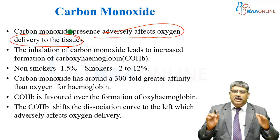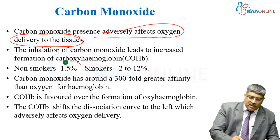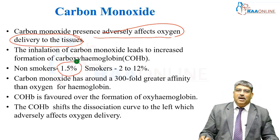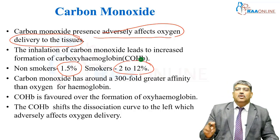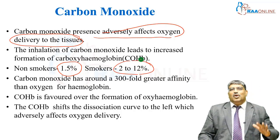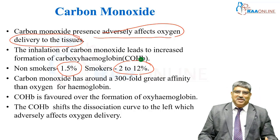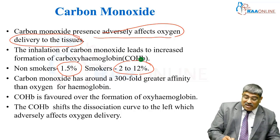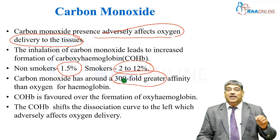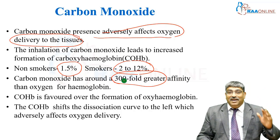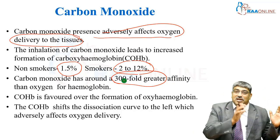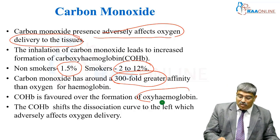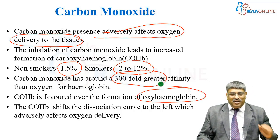Normally, in a normal individual without smoking, the concentration of carboxyhemoglobin is less than 1.5%. But in smokers, it increases to 2 to 12%. Carbon monoxide has about 304 times greater affinity to hemoglobin than oxygen. So, carboxyhemoglobin is going to be favored over oxyhemoglobin, which is very important in oxygen delivery to the tissue.